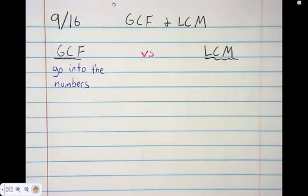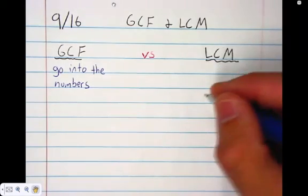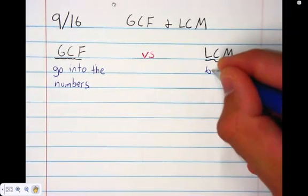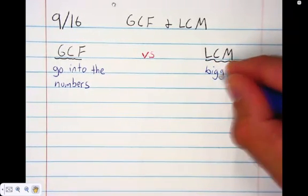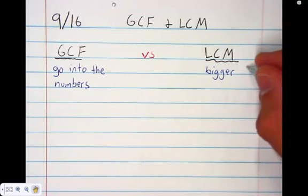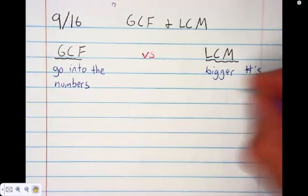LCM is kind of the opposite. If GCF are numbers that go in, LCM would have to be bigger numbers that go out.